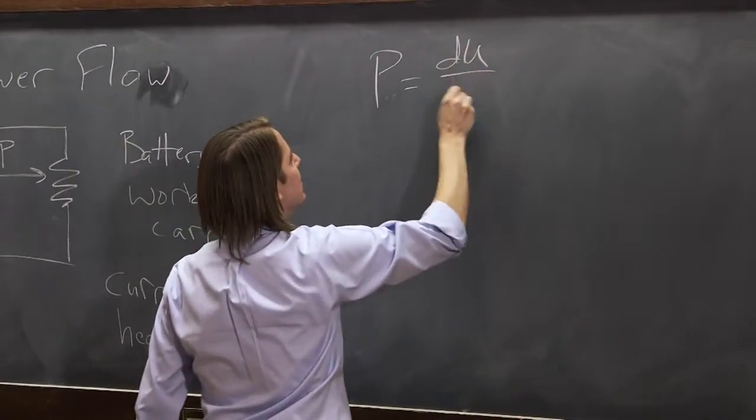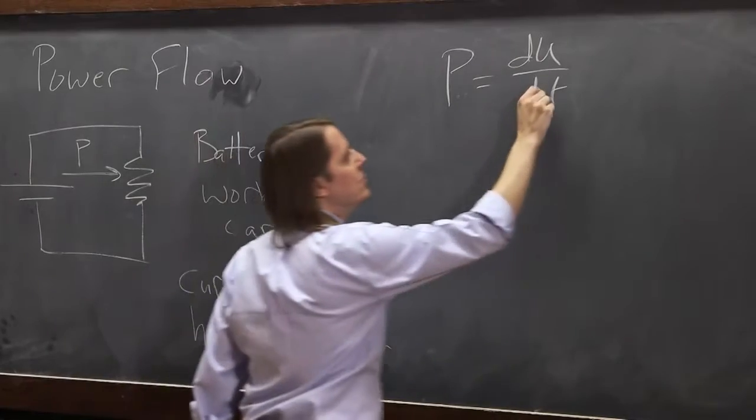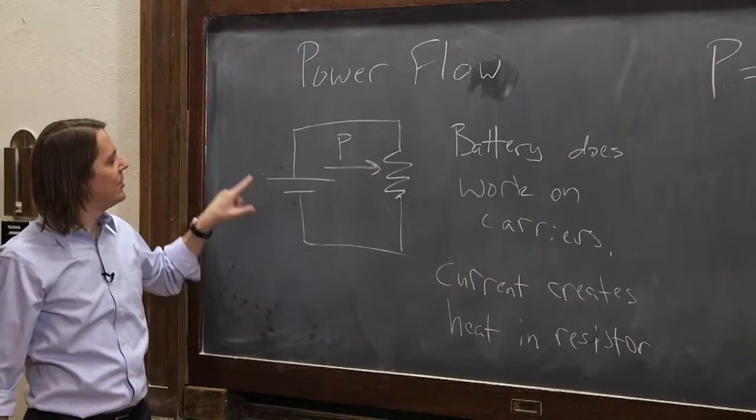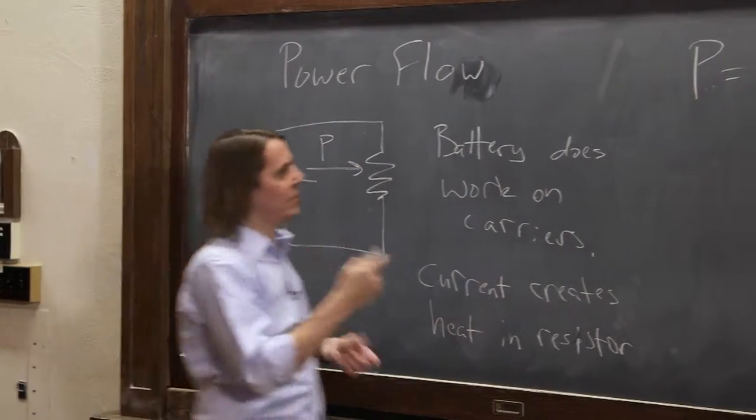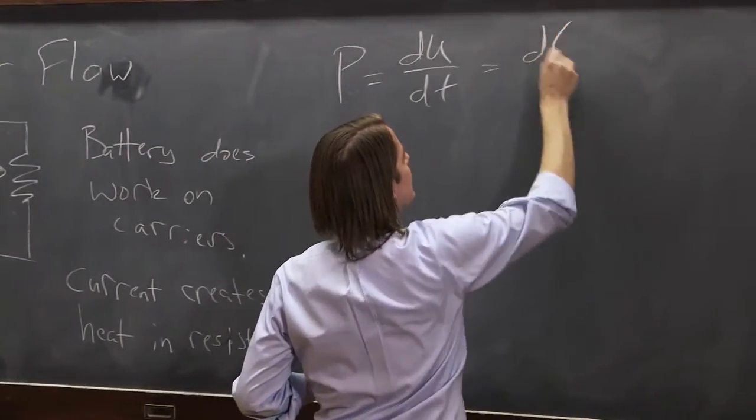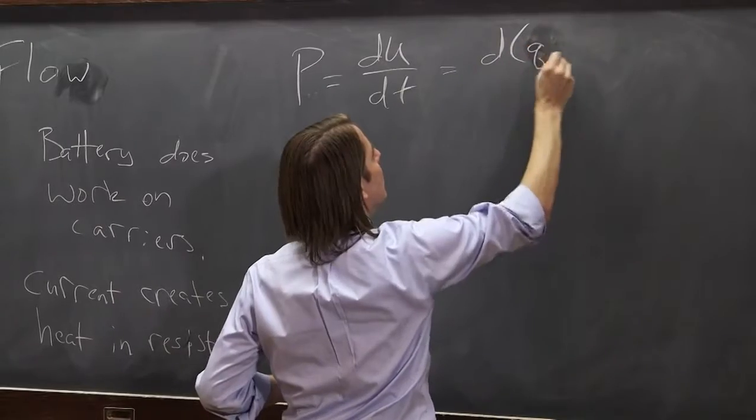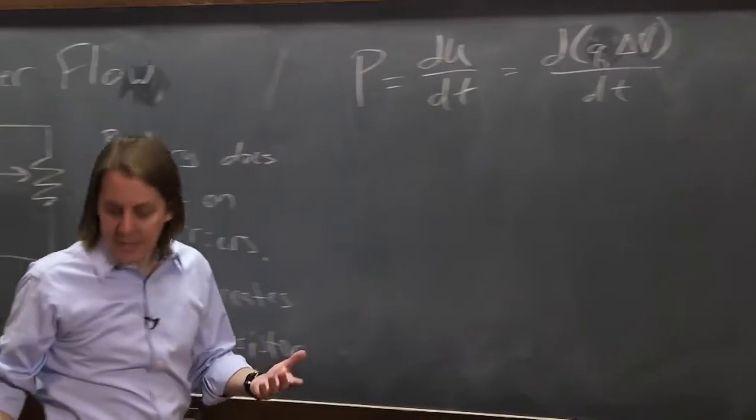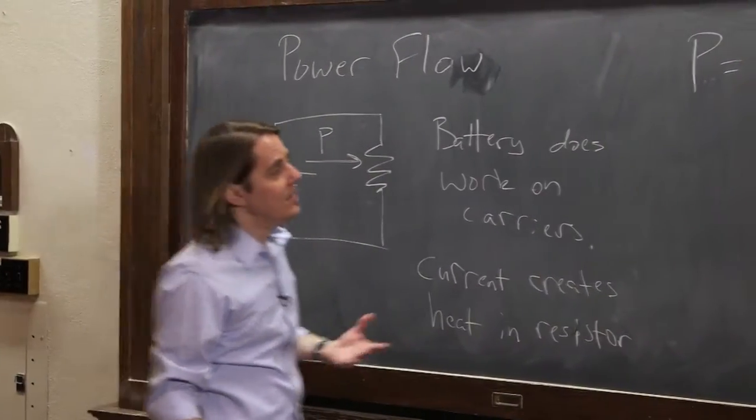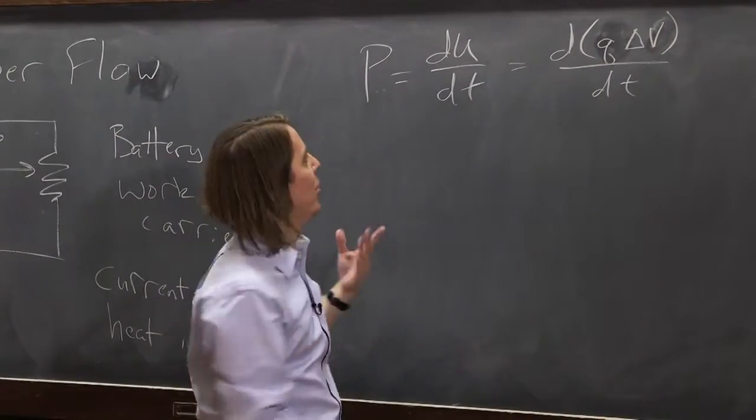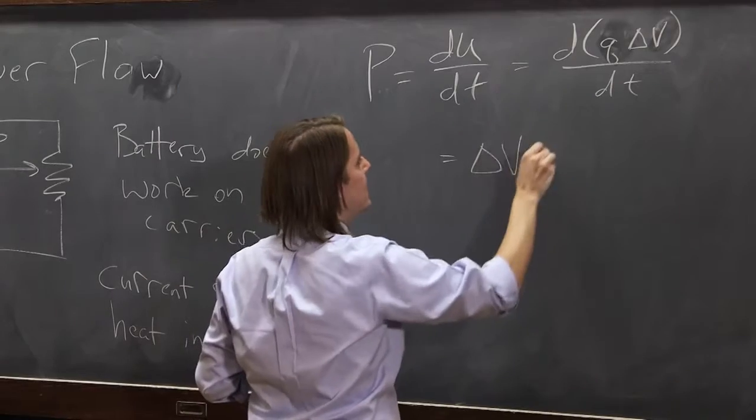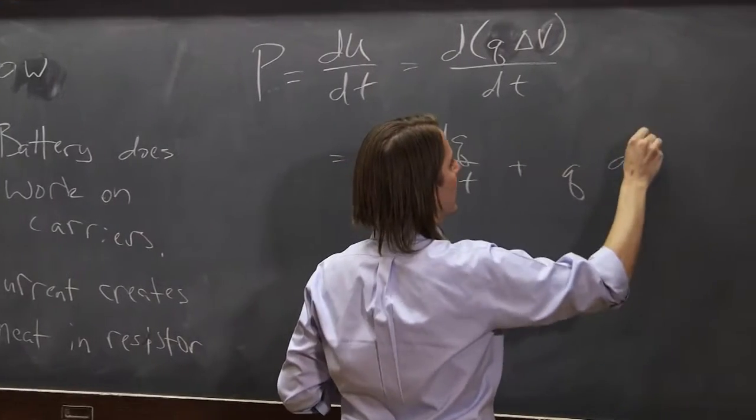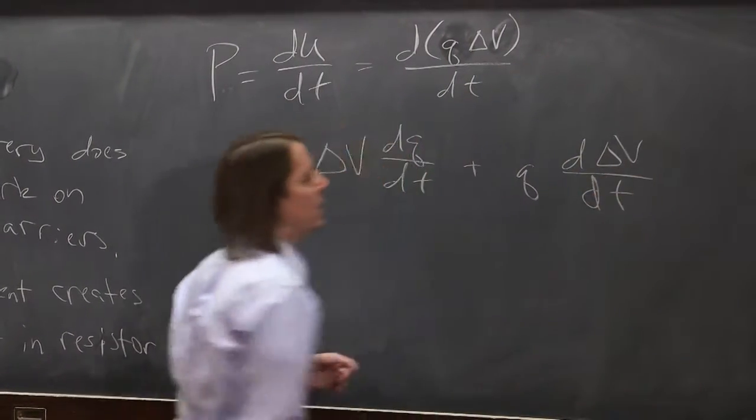So let's look at it quantitatively for a minute. Let's think about the battery. The power is the change in energy per unit time, we'll call it du dt. And what it's doing is taking carriers of charge q and giving them a potential difference delta v. It's raising their potential. So that would be d times their charge q delta v dt.